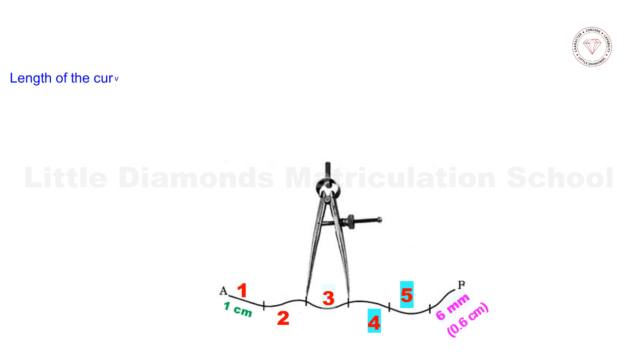Length of the curved line is equal to: number of segments times length of each segment plus length of remaining part. That is equal to 5 times 1 centimeter plus 0.6 centimeter, which is equal to 5.6 centimeter.